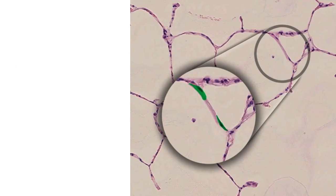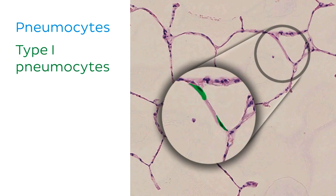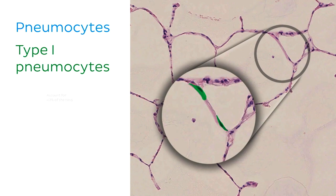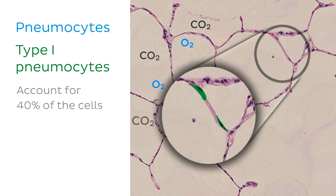There are a few different cell types that make up the walls of the alveoli. Remember that the alveoli is where gaseous exchange occurs, so the cells that make up the alveolar walls are there to facilitate that process. What we can see highlighted now is a pneumocyte. There are two types: type 1 and type 2. Type 1 pneumocytes form about 90% of the surface area lining the alveoli, but numbers-wise account for about 40% of the cells. They are very thin, which is ideal for gas exchange.